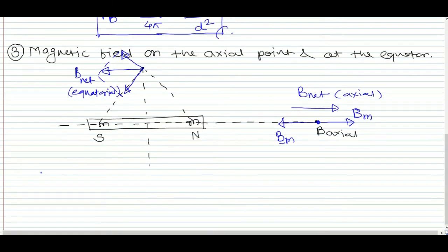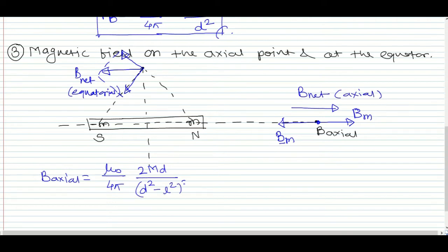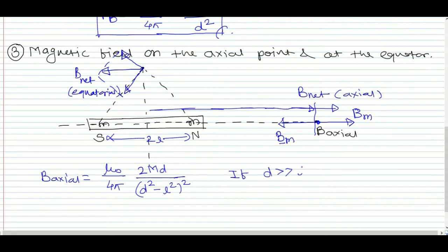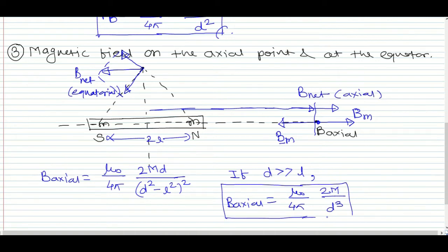The formula for B on the axial point is: B_axial = μ₀/4π × (2Md) / (d² - l²)², where d is the distance and l is the half-length of the magnet. When d is much greater than l, this simplifies to B_axial = μ₀/4π × 2M / d³.